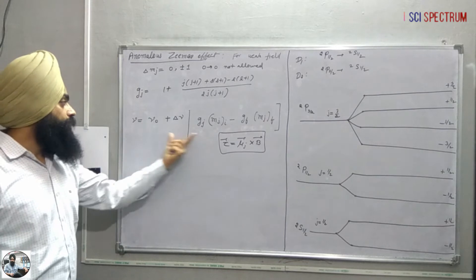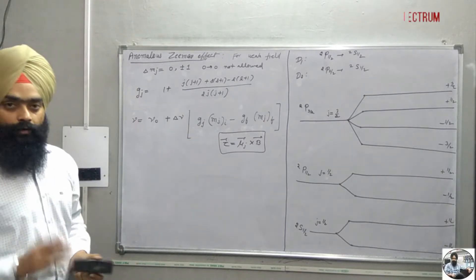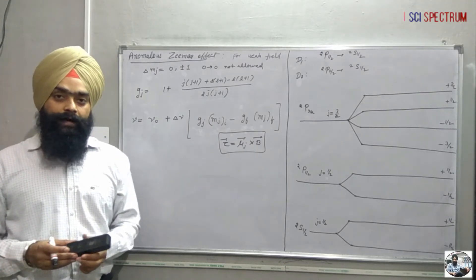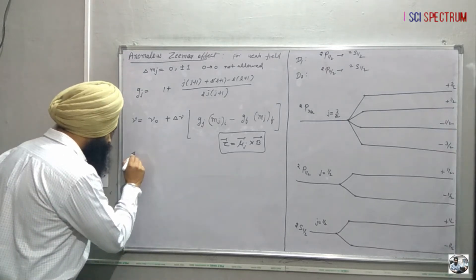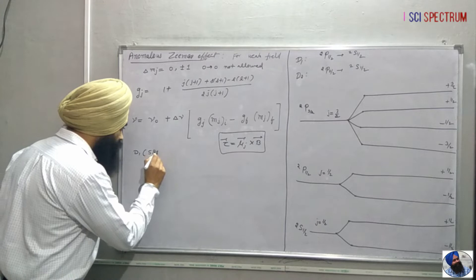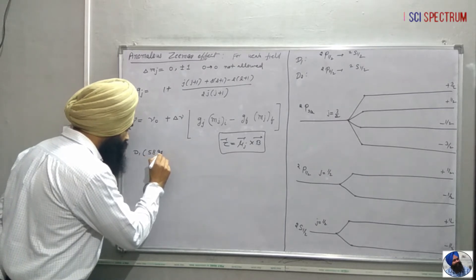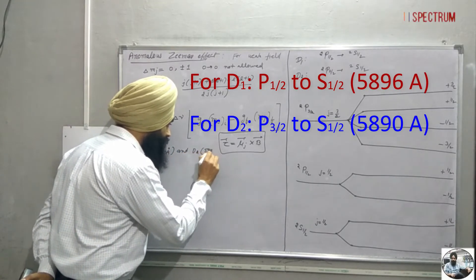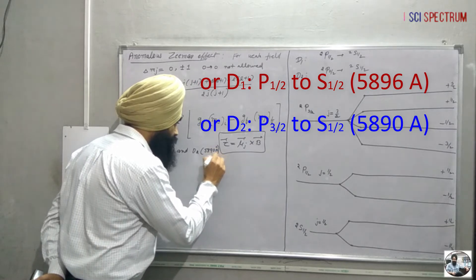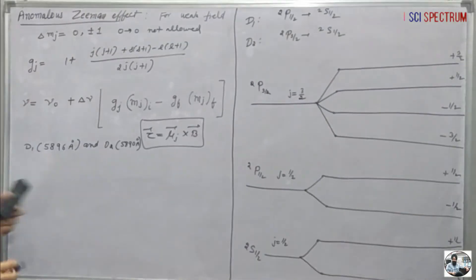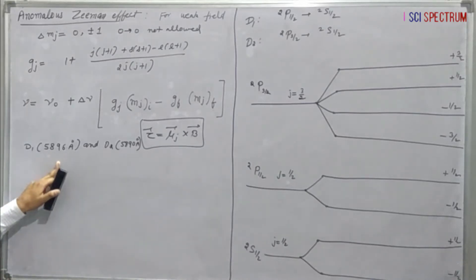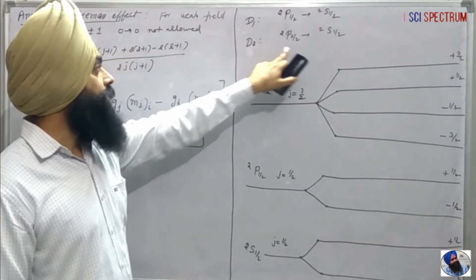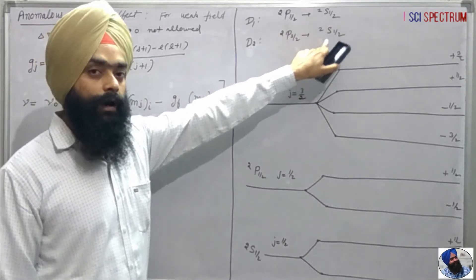This is the formula to calculate the frequency. Here we are going to discuss very important spectral lines called sodium D-lines. We have two lines: D1 at 5896 Angstroms. The D1 line is represented by the transition 2p½ to 2s½, and the D2 line is represented by the transition 2p(3/2) to 2s½.